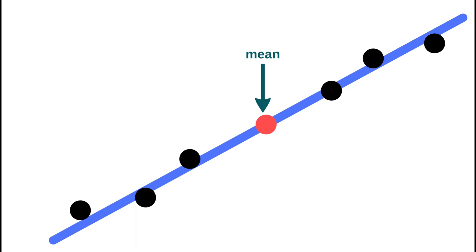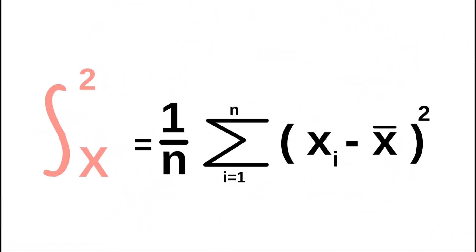The formula for calculating variance is variance equals 1 divided by n times the sum of (x_i minus x-bar), the mean or the arithmetic mean, squared.